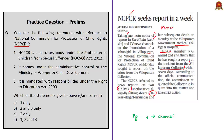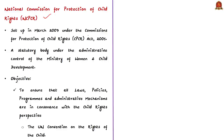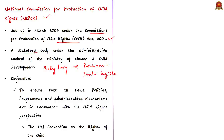NCPCR was set up in 2007 under the Commission for Protection of Child Rights Act 2005. This commission is a statutory body because it was established as per an Act of Parliament. NCPCR is under the administrative control of the Ministry of Women and Child Development of the Government of India. The Commission's mandate is to ensure that all laws, policies, programs, and administrative mechanisms are in consonance with child rights as enshrined in the Constitution of India and as per the UN Convention on the Rights of the Child. A child is defined as a person in the age group of 0 to 18 years.